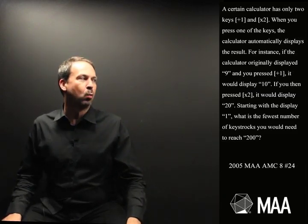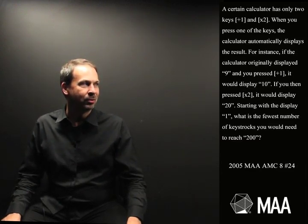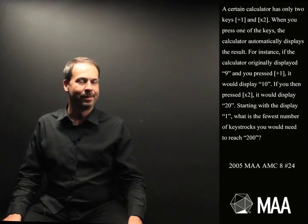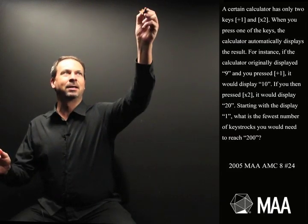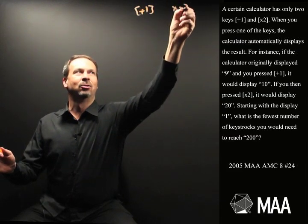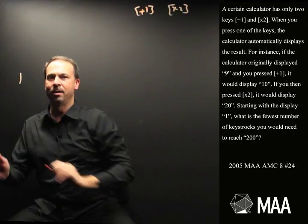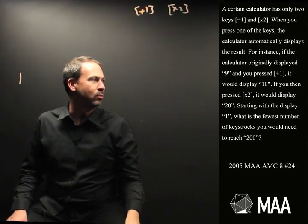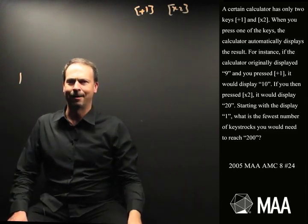Starting with the display showing 1, what is the fewest number of keystrokes you would need to reach 200? So all I can do is plus 1s and times 2s. I'm going to start with the number 1 and get to the number 200 in the most efficient way possible. How many keystrokes is that?